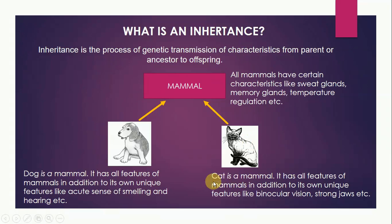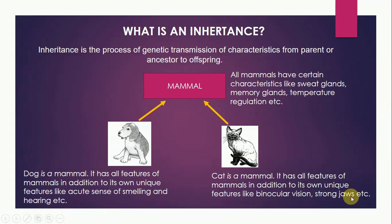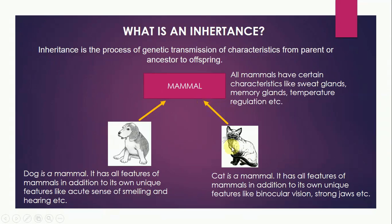Now we take the example of cat. The cat is also a mammal and it has all features of mammals like sweat glands, temperature regulation, mammary glands etc. And in addition to this it has its own unique features like binocular vision, strong jaws etc. So we have seen that in real life, animals or birds all have some features which are common and then they have their own unique features also. They are inheriting the features of their base classes.